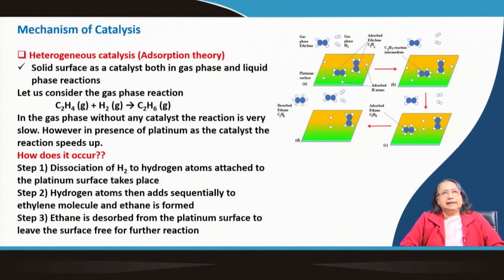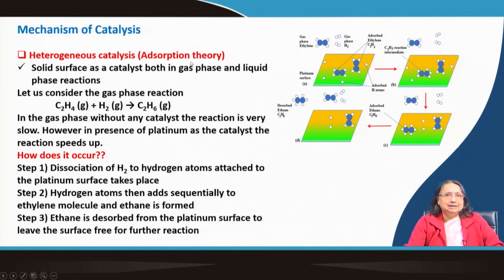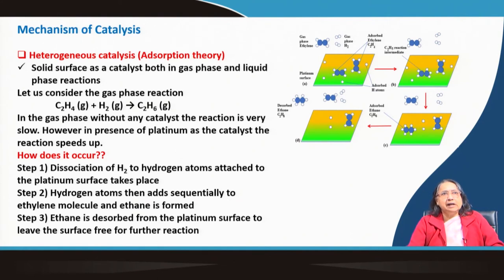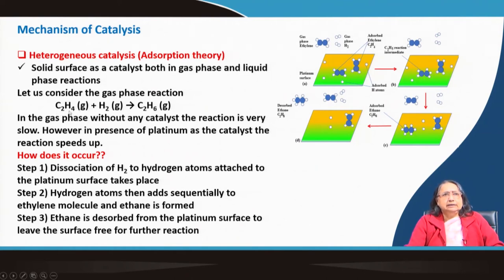The mechanism for heterogeneous catalysis is explained primarily by adsorption theory. Solid surfaces serve as catalysts in both gas-phase and liquid-phase reactions. As an example, consider ethylene plus hydrogen giving ethane — ethylene has a double bond and hydrogen adds across it to form ethane. In the gas phase without a catalyst the reaction is very slow; however, in the presence of platinum as catalyst the reaction speeds up considerably.